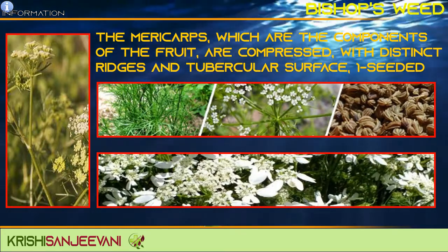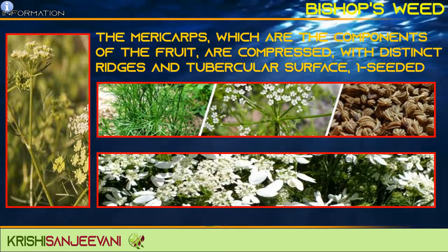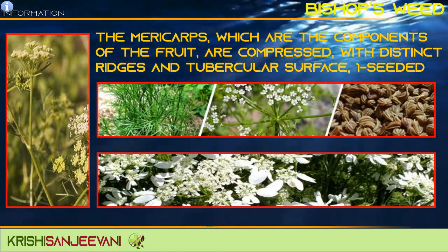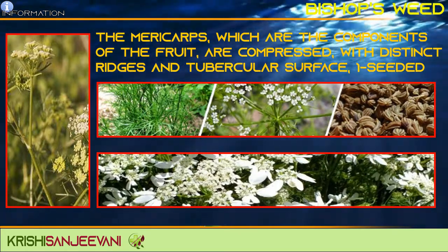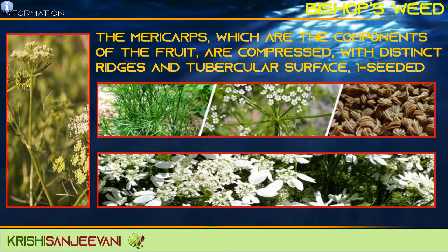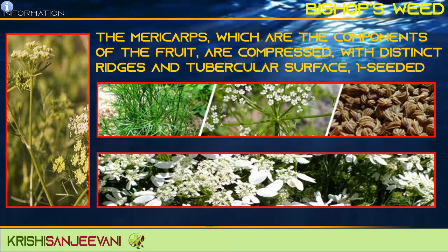The mericarps, which are the components of the fruit, are compressed with distinct ridges and a tubercular surface, and are once-seeded.